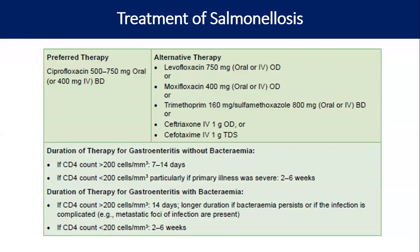For Salmonella specifically, the preferred therapy is ciprofloxacin; alternatives are levofloxacin, moxifloxacin, cotrimoxazole, ceftriaxone, or cefotaxime. Duration of treatment in PLHIV differs: for gastroenteritis without bacteremia with CD4 >200, treat 7–14 days; with CD4 <200, treat 2–6 weeks. For gastroenteritis with bacteremia, if CD4 >200 treat 14 days or longer; if CD4 <200 treat 2–6 weeks. We need to remember this duration because premature stopping can lead to relapse.